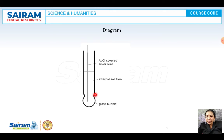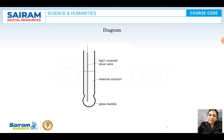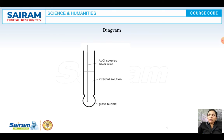In the glass electrode, there will be a glass membrane made by using special quality glass. Inside the glass electrode, there will be a secondary reference electrode — either a silver/silver chloride electrode or a calomel electrode. There will also be a platinum wire for external electrical contacts. Inside the glass bulb, there will be an internal reference solution of 0.1 molar HCl.